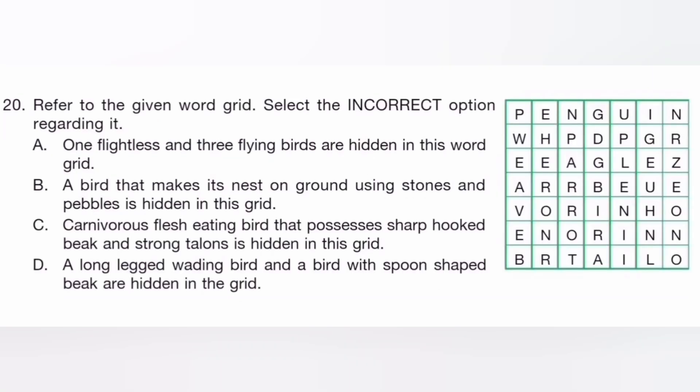Refer to the given word grid. Select the incorrect option regarding it. The answer is D. A long-legged wading bird and bird with the spoon-shaped beak are hidden in the word grid.